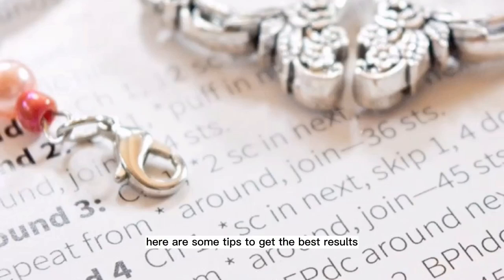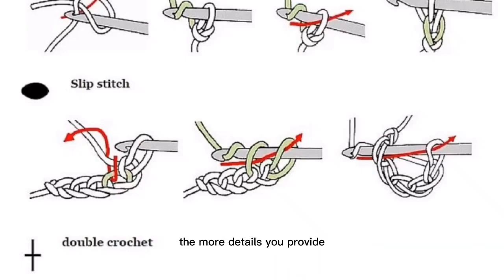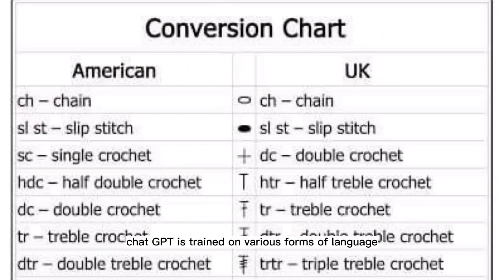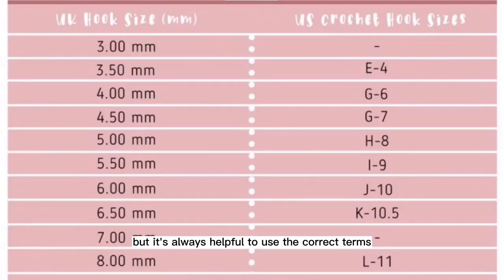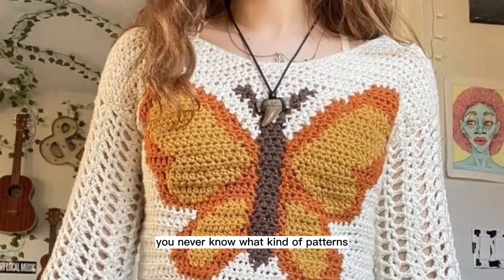Here are some tips to get the best results when using ChatGPT for crochet patterns. Be specific and clear in your descriptions — the more details you provide, the more accurate your pattern will be. Use proper crochet terminology, as ChatGPT is trained on various forms of language but it's always helpful to use the correct terms. And experiment with different inputs — you never know what kind of patterns you may come up with.